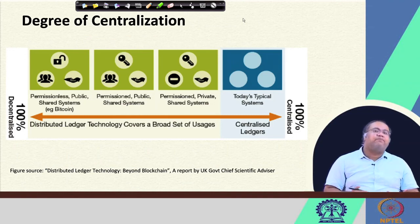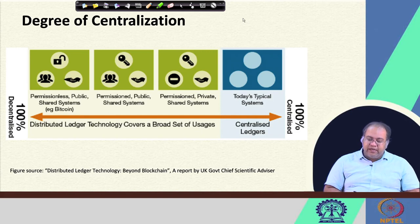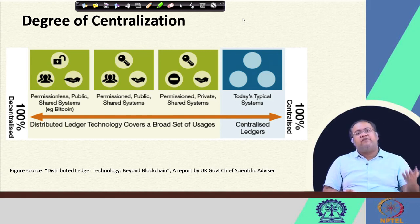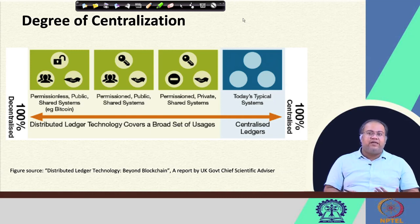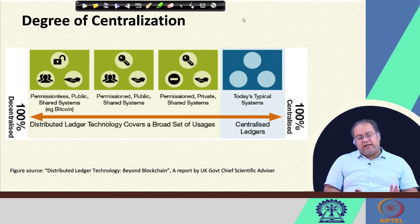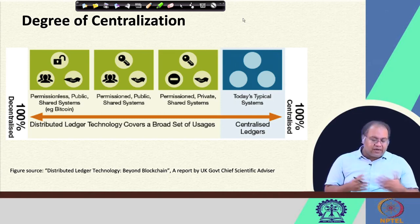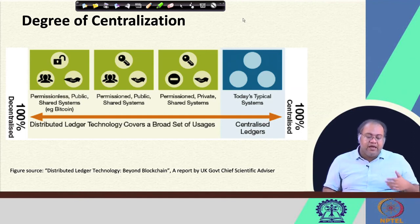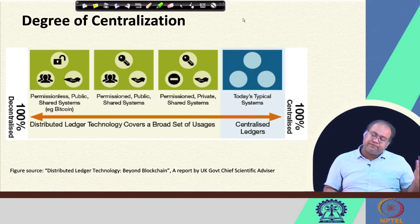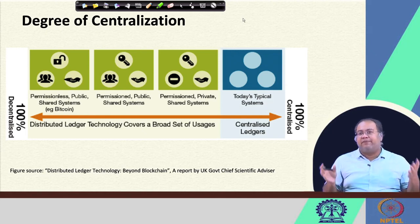Thinking about the power of blockchain — today's typical systems follow a kind of centralized ledger where you maintain information, share it manually, and auditors verify it — 100 percent centralized. Blockchain helps you decentralize every architecture, and as you move towards decentralization you reduce the risk of fraudulent behaviors. For example, a permissionless public shared system like Bitcoin provides 100 percent decentralization.